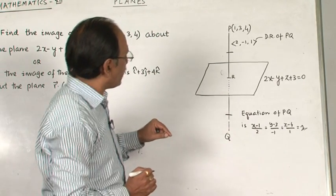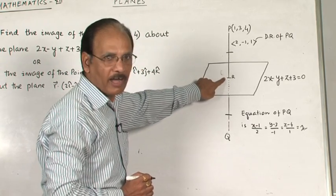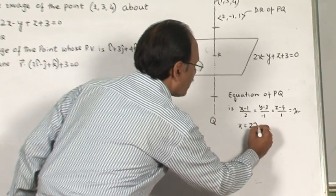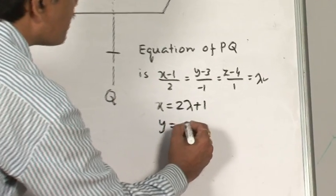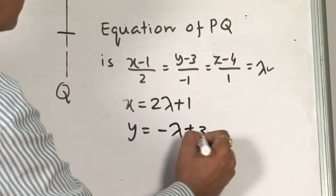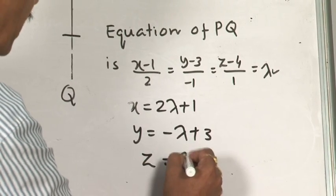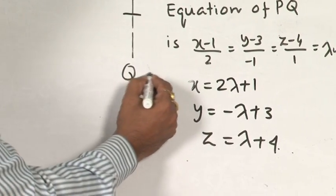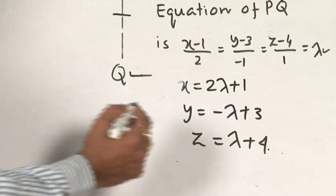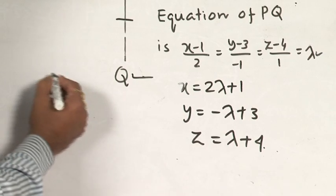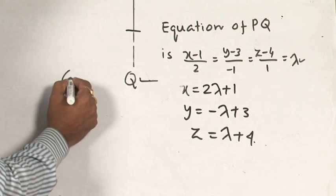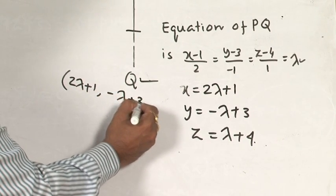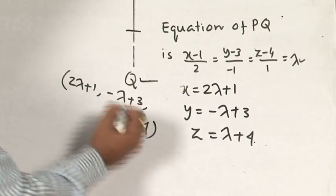We have to find the value of the parameter at point R. Setting each ratio equal to λ, we get x = 2λ + 1, y = -λ + 3 and z = λ + 4. So the coordinates of Q are (2λ + 1, -λ + 3, λ + 4).